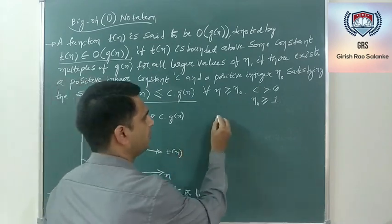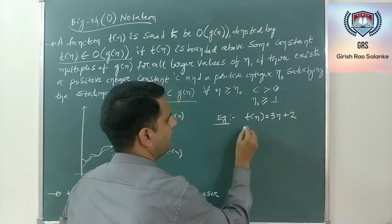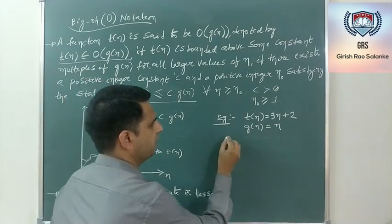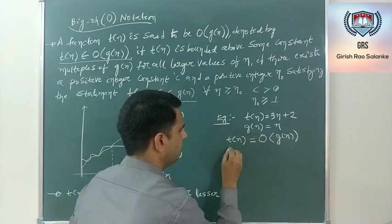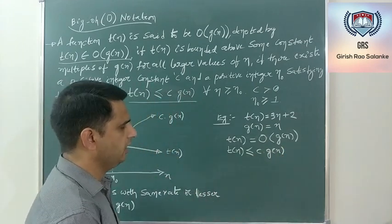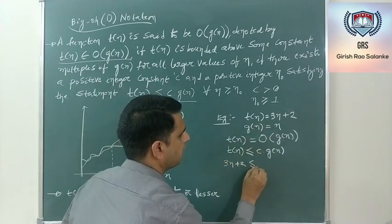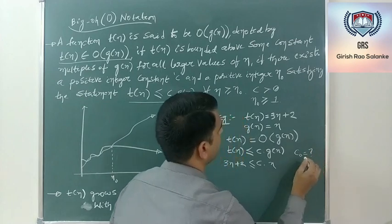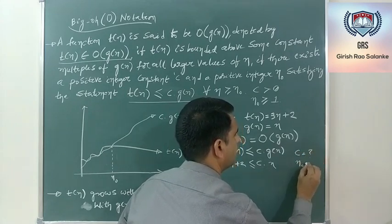Now coming to an example: let T(N) = 3N + 2 and G(N) = N. The definition says that in order to have T(N) = O(G(N)), we need T(N) ≤ C·G(N). Substituting, we get 3N + 2 ≤ C·N. Our objective is to find for what value of C and N₀ this equation is true.